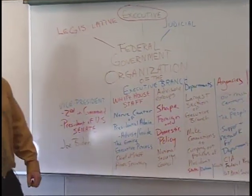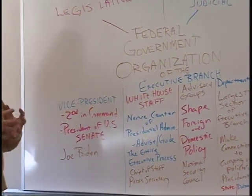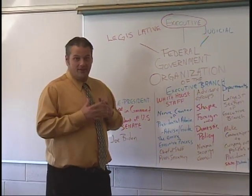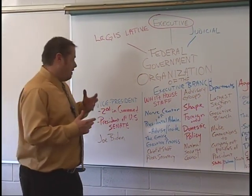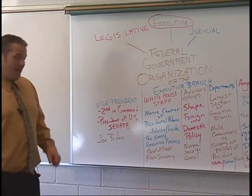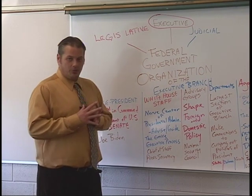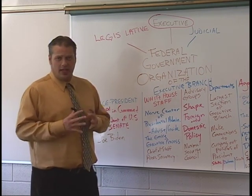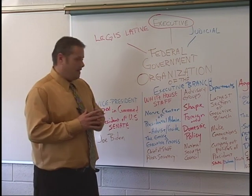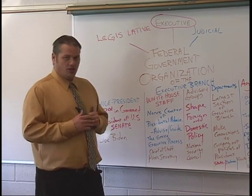Advisory groups — executive advisory groups — shape foreign and domestic policy. These are experienced leaders that the president will organize as people who will closely advise him on major domestic and foreign issues. The National Security Council is an example of this. They get a lot of national recognition, have some responsibility, and are considered experts in their field, whether it's national defense, education, or housing and urban development. These individuals will be put into advisory groups that will advise the president directly on decisions that should be made.